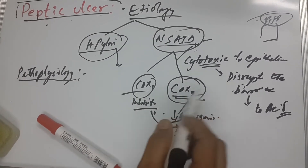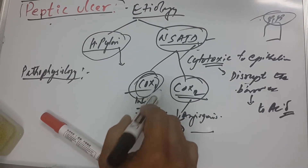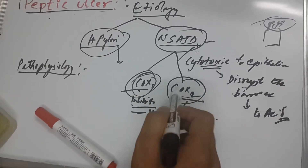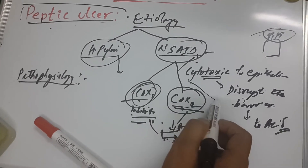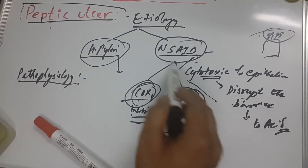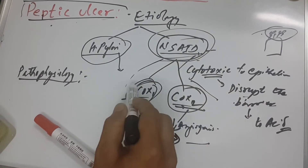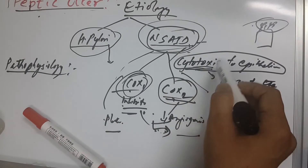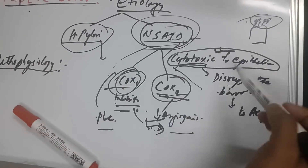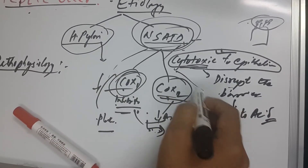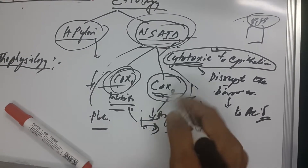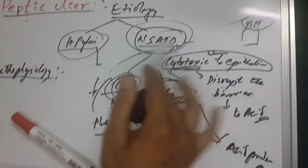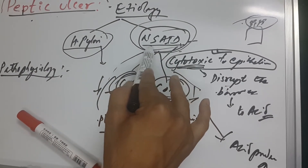COX-1 is predominantly active in the GIT, COX-2 is predominantly involved in somatic pain, and COX-3 acts in the brain. Their main problem is impairment of prostaglandin and platelet formation. The cytotoxic effect and decrease in COX-1 and COX-2 activity leads to increased acid production.